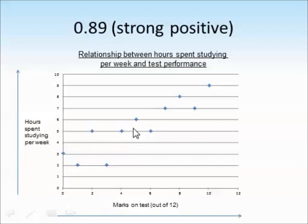Each of these data points represents two pieces of information from each participant. So this participant studied for five hours and scored two out of twelve on the test. This is an example of a strong positive correlation because we can see the longer somebody studies for, the higher their mark on the test.